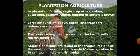The third type of commercial farming is plantation agriculture. It was introduced by the Europeans in their colonies in the tropical regions. In plantation agriculture, a single crop of tea, coffee, sugarcane, cashew, rubber, banana or cotton is grown in vast areas. Large amounts of capital, skilled labour, scientific techniques, efficient transport network, and managerial and marketing skills are needed. The farm produce is either processed on the farm itself or sold to nearby factories. Major plantations found in the tropical regions are rubber plantations in Malaysia, coffee in Brazil, and tea in India and Sri Lanka.